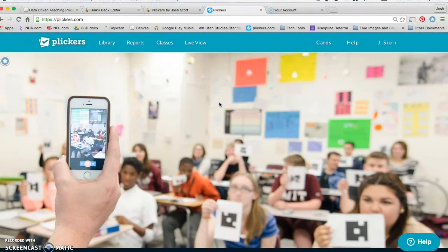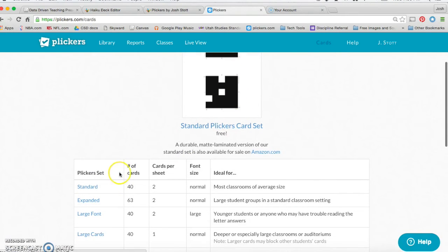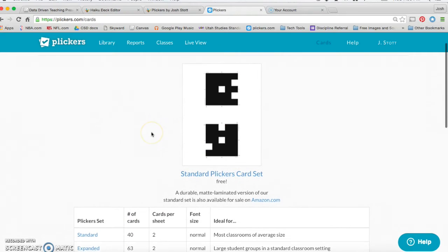Go to Plickers.com. Then, a few things you need to do. Make an account. After that, you'll go to Cards. Here's where you can get blueprints to print out the cards that each student will need. There are several different sizes.